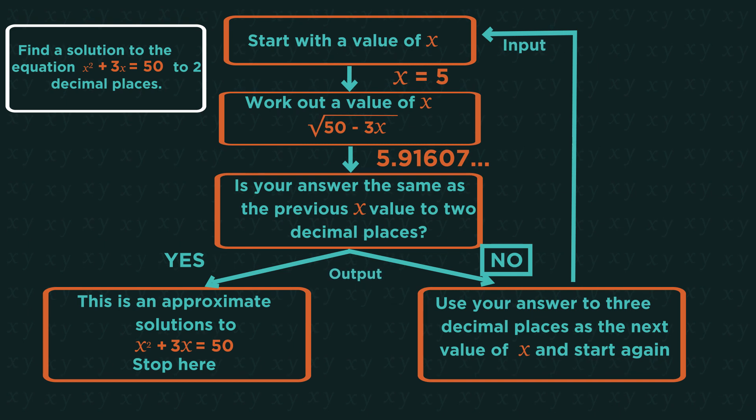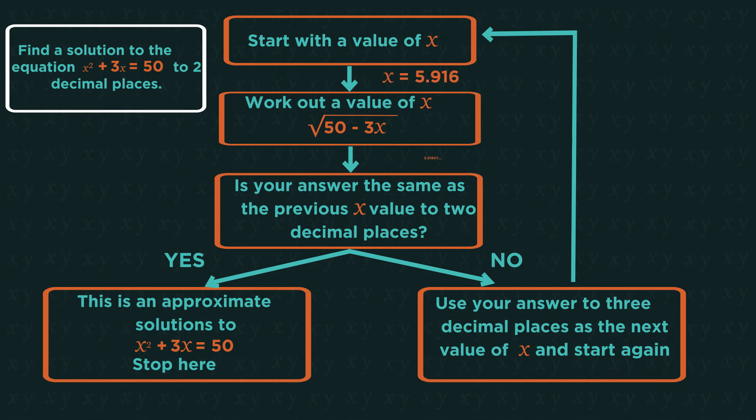So then 5.916 goes back into the cycle. In goes 5.916 and out comes 5.679 which is different. So we put it back into the cycle. And so the cycle keeps on going until, eventually, we get an approximate answer that is accurate enough.